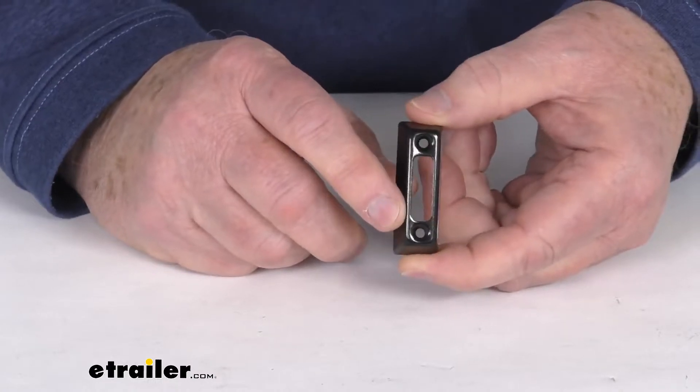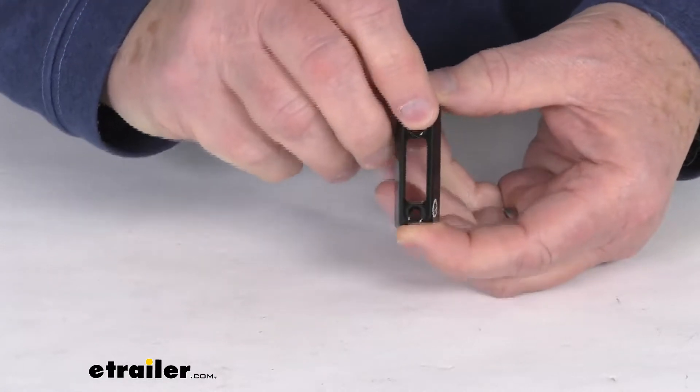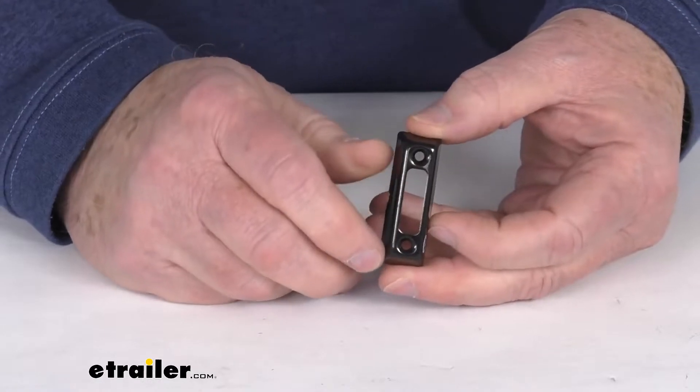Now this black cover will provide a nice protective case for your light and it will allow you to mount your TecNiq Mini LED Accent Light to your boat.